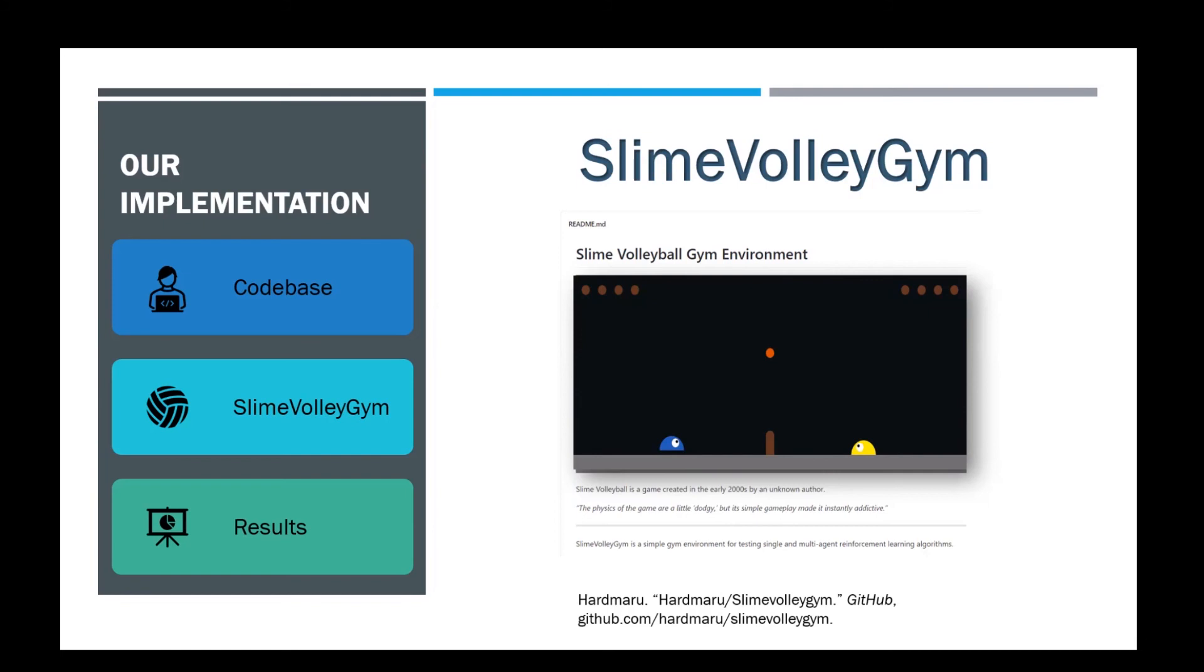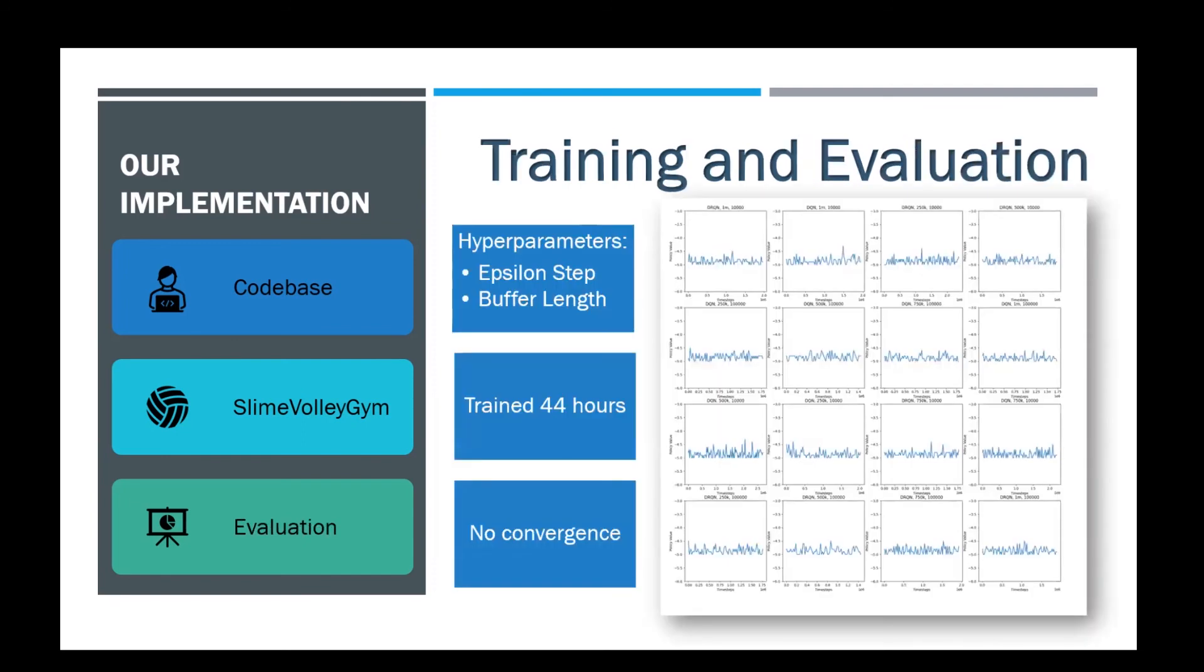We trained for 44 hours. The behavior policy during training was epsilon greedy with epsilon annealed linearly from 1.0 to 0.1 over a fixed number of steps, and fixed at 0.1 thereafter. But guess what? This was still not simple enough.